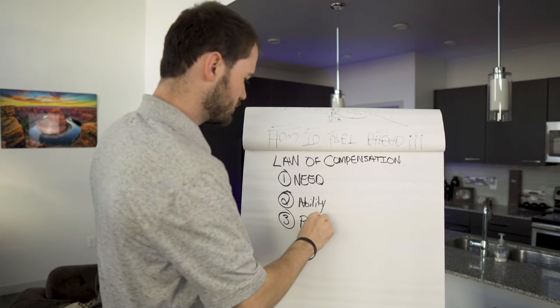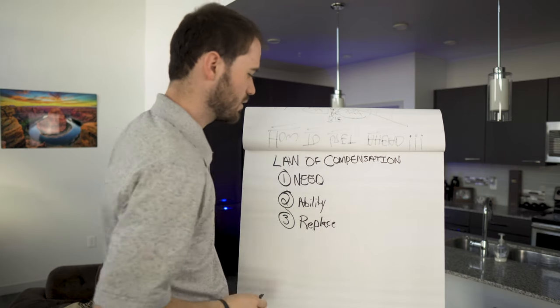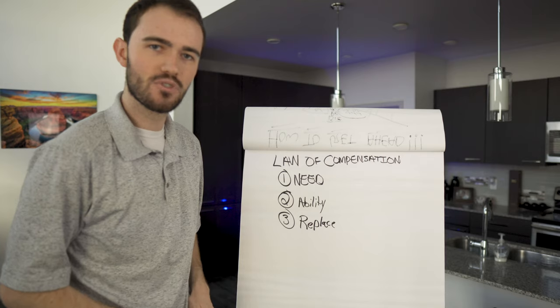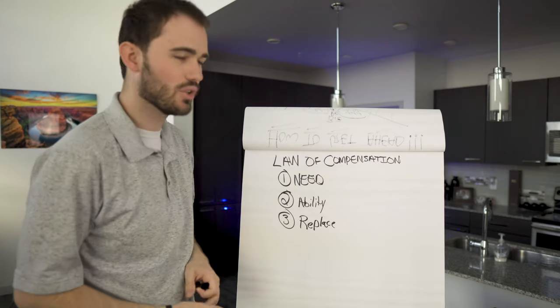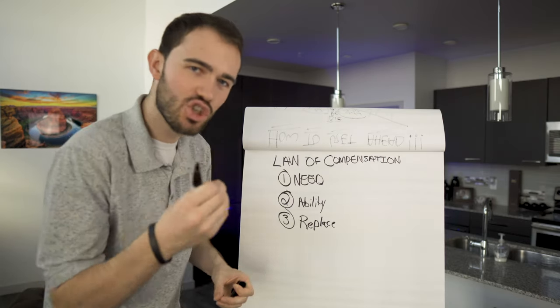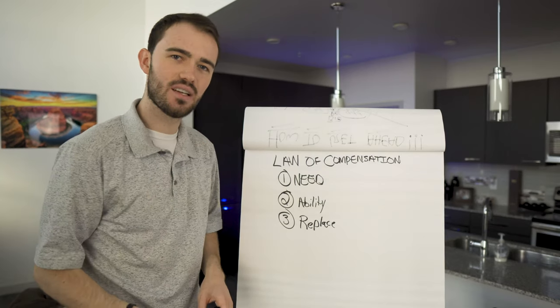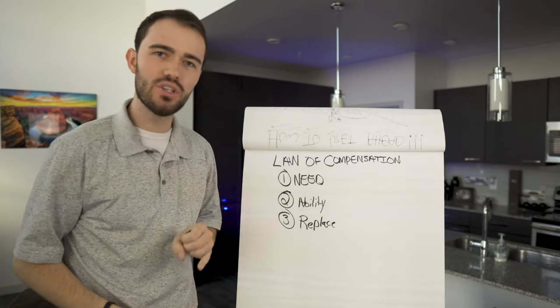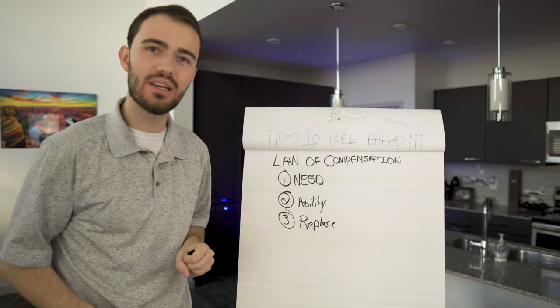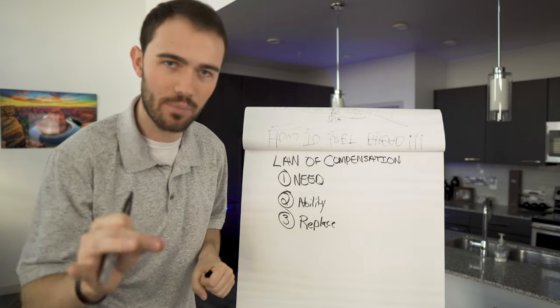And then number three, replacement. So the law of compensation clearly states that how much you make every single day is exact to the need for what you do, your ability to do it, and the difficulty there is in replacing you.